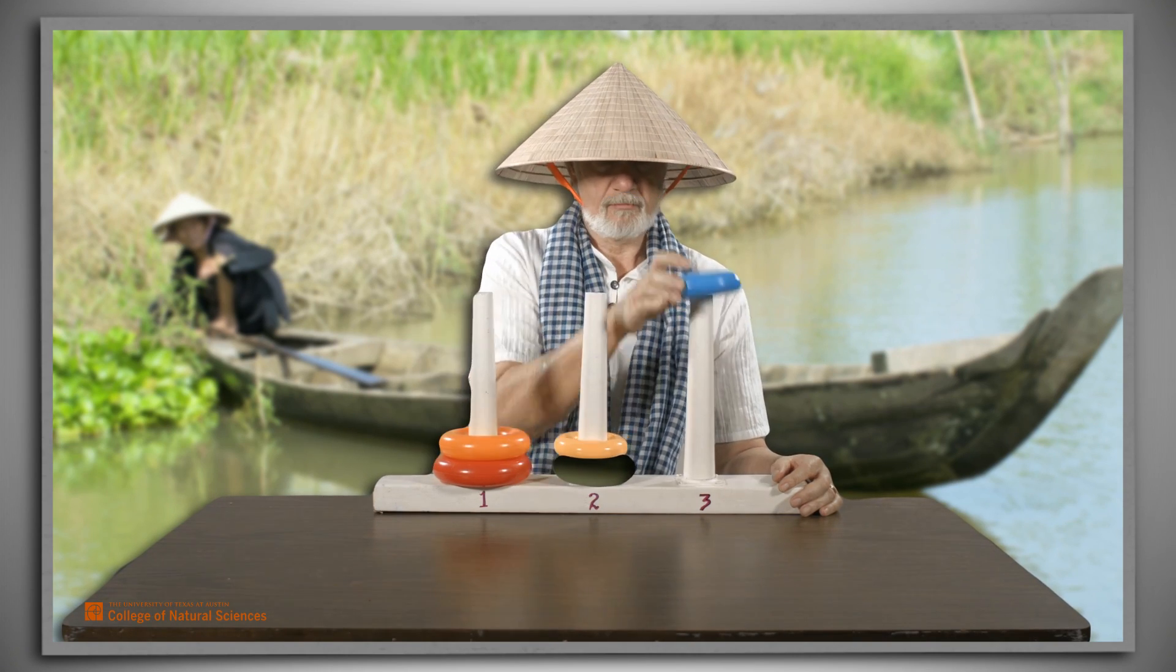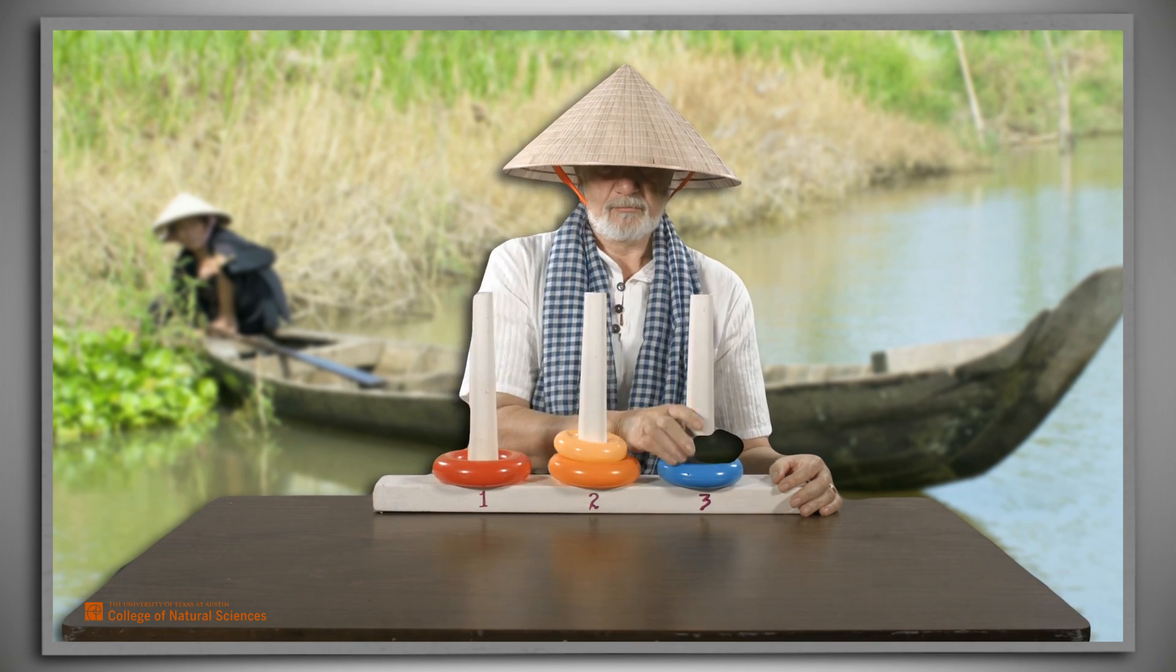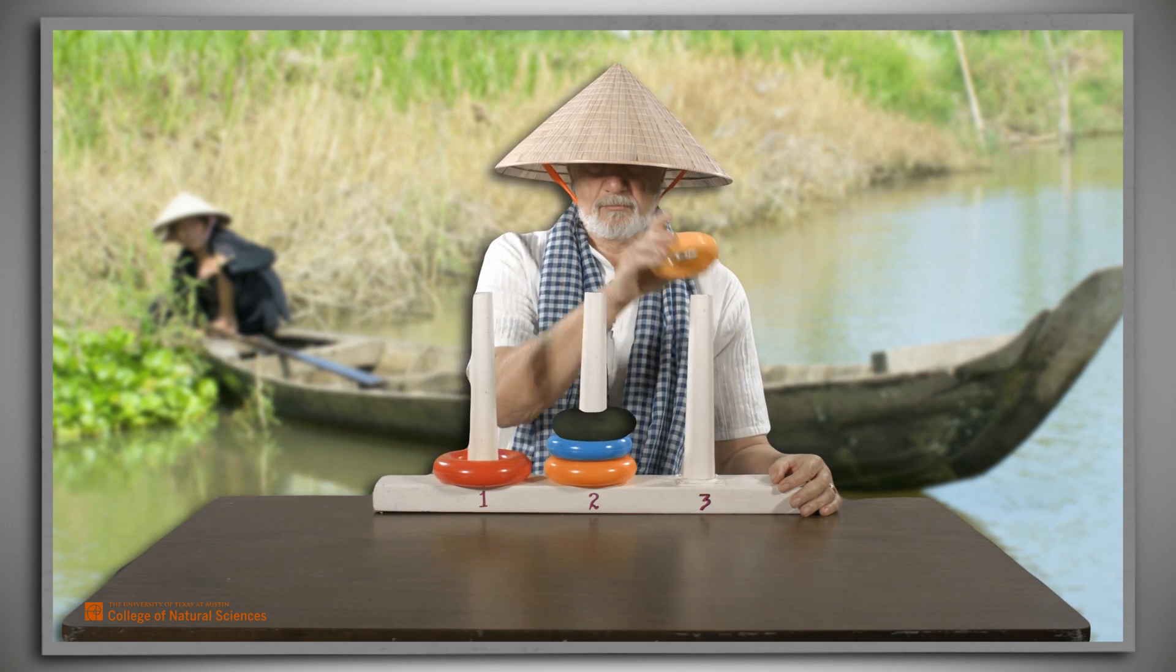A solution to a Towers of Hanoi problem is a sequence of moves that transfers an entire stack of disks from one pole to another, following the three important rules of the puzzle.